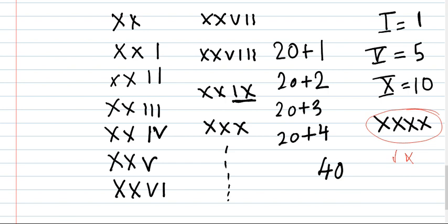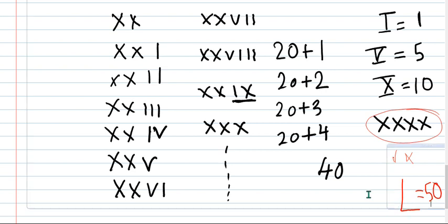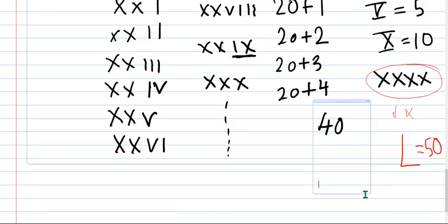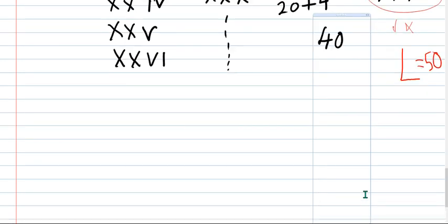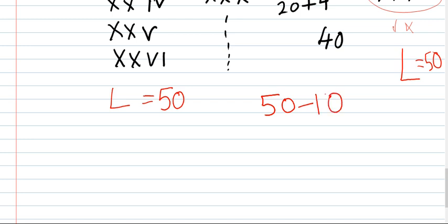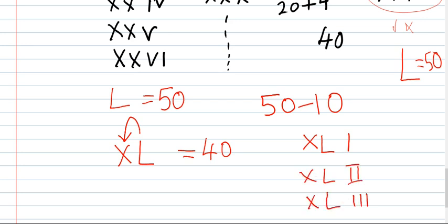To write 40, we know that the alphabet L stands for 50. So how do we write 40? 50 minus 10 is 40. To minus 10, where do we have to write the number? Behind the letter. So this is 50 minus 10 equals 40.